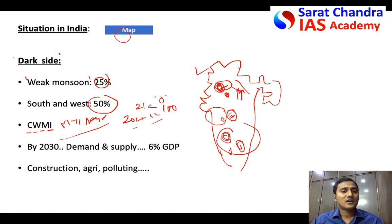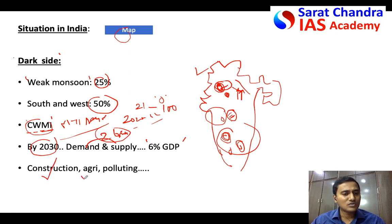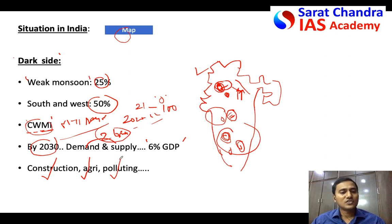The CWMI report also stated that by 2030, demand for water in India will be twice the supply, which could lead to almost 6 percent loss in GDP. Agricultural practices are still not water-sensitive. Despite having the Water Pollution Prevention Act and the Environment Protection Act, rivers, lakes, wetlands, and groundwater are still getting polluted. This represents the dark side of the water situation in India.